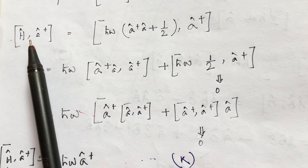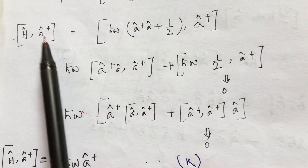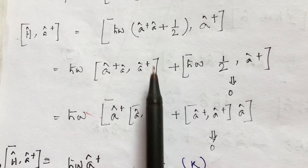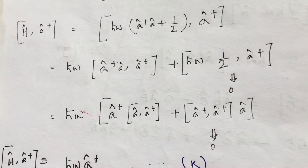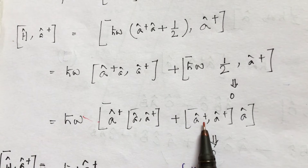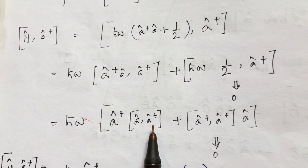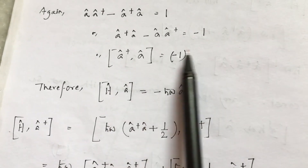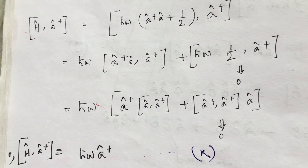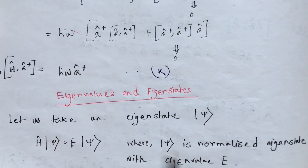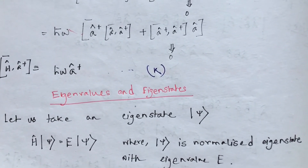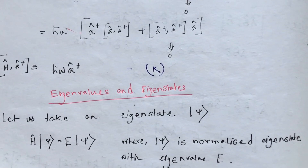Now I need to find the commutation relation of H and a†. Again I substitute the value of the Hamiltonian and apply the same algebra and the same identity. The term [a†, a†] equals 0 since any operator commutes with itself, and applying the same procedure I obtain equation k for the commutation relation of H and a† with the Hamiltonian.